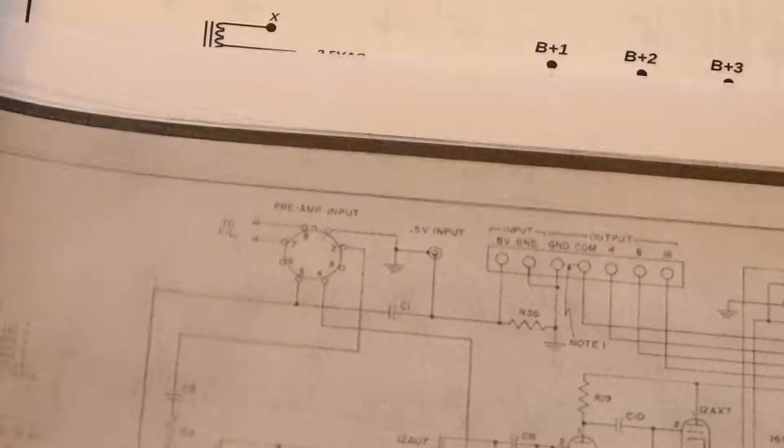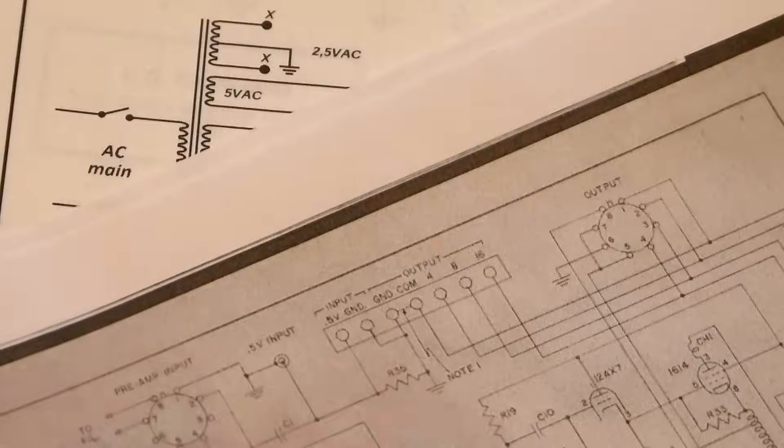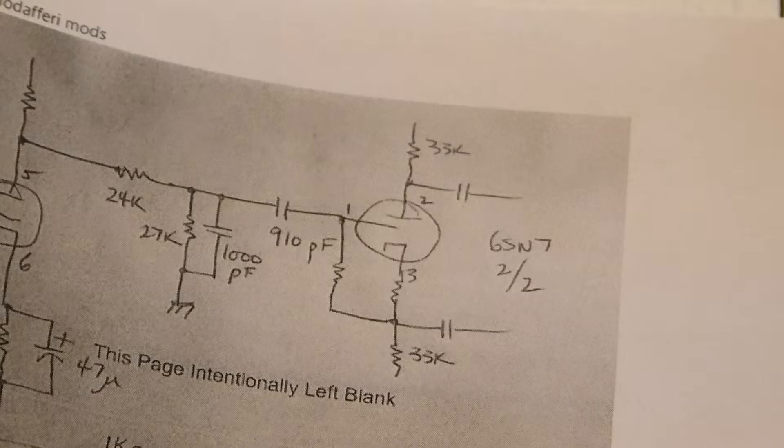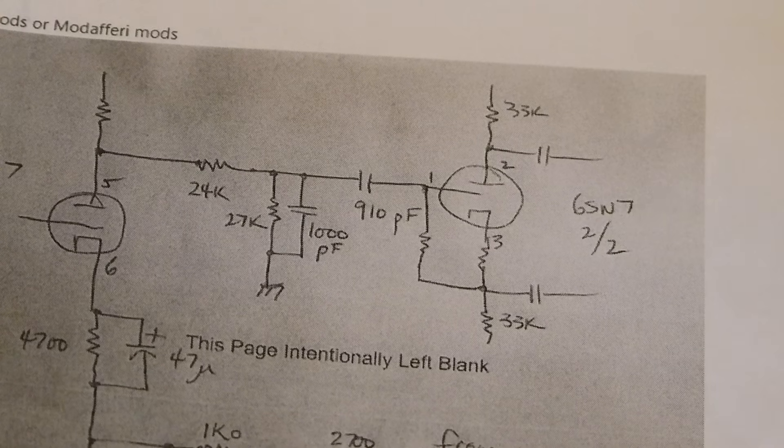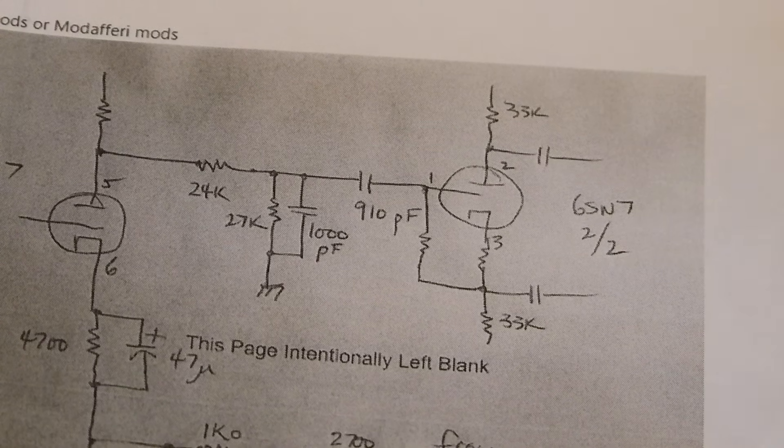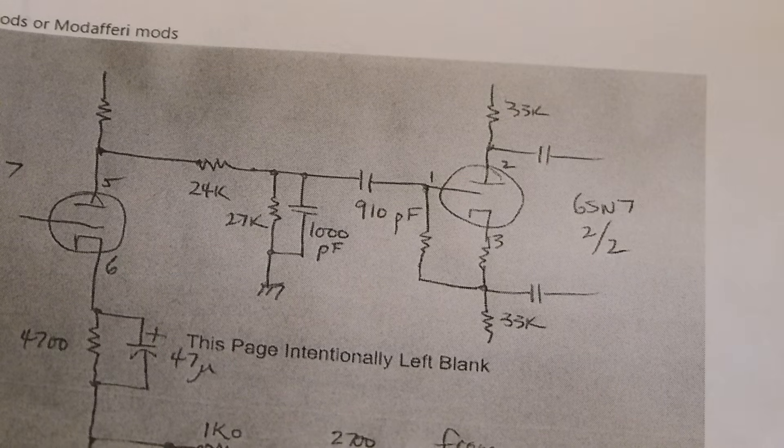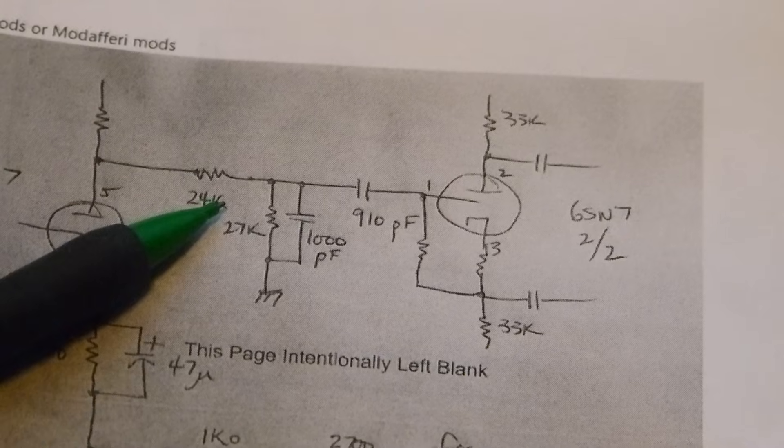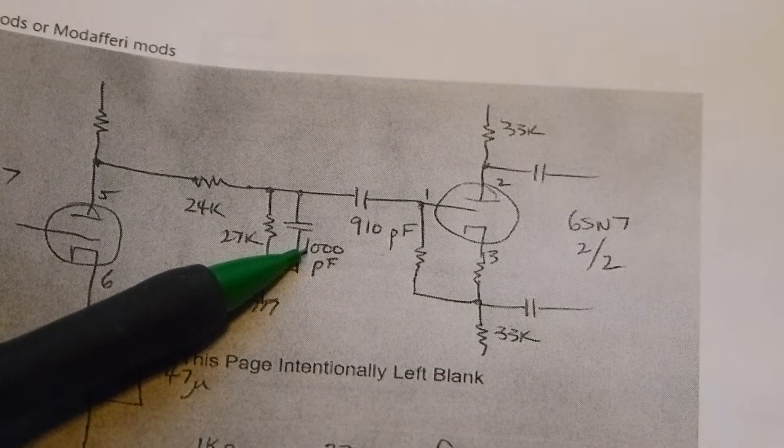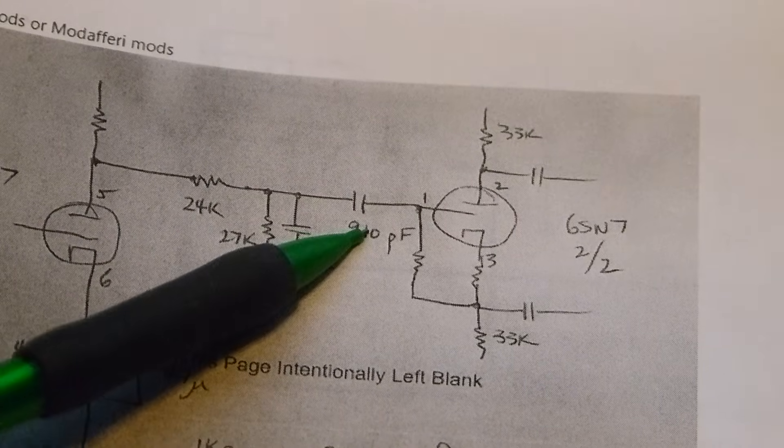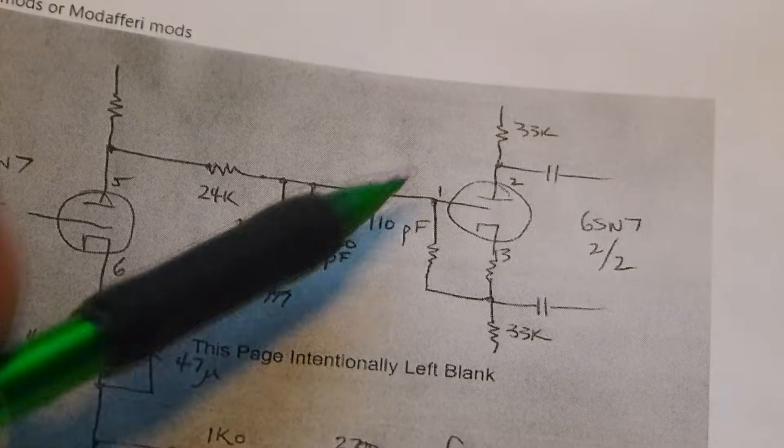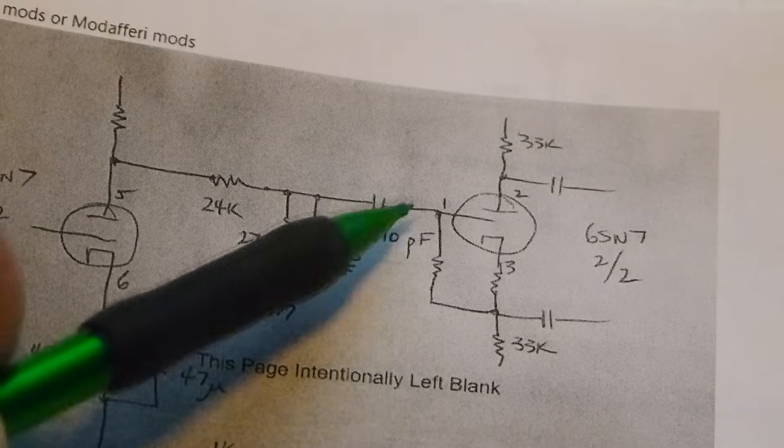Here's one, apparently, of the Brooks 12A redesigned by Paul W. Klipsch back in his day. He uses pretty much the same thing - he's got the 24k, the 0.001 or a thousand picofarad, one nanofarad, whatever you choose to call it.